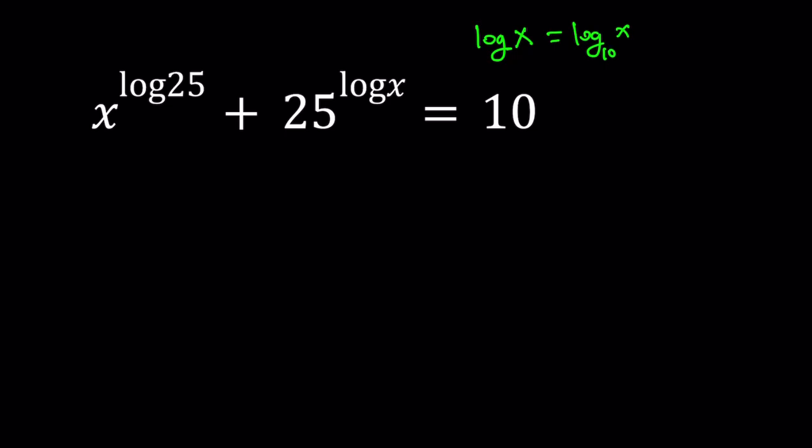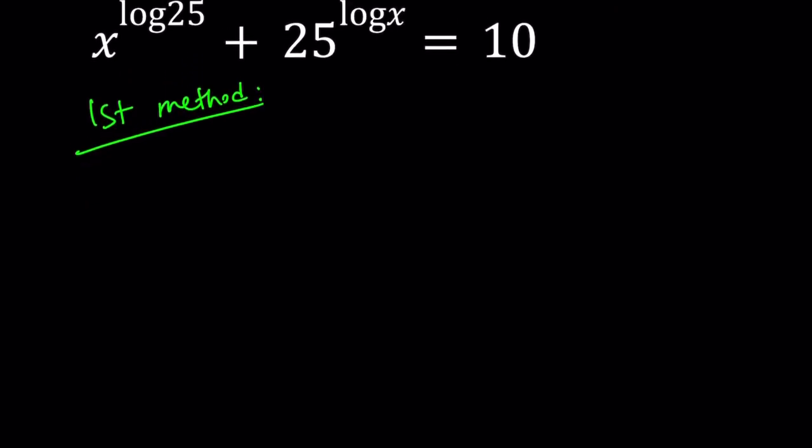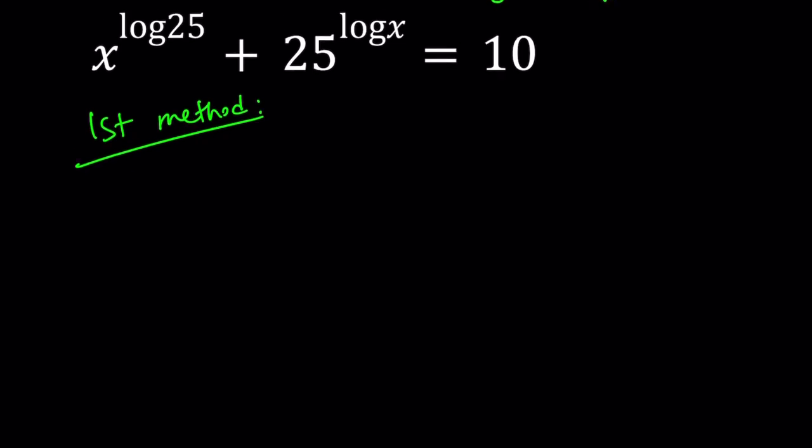So I'll be presenting two methods and let's start with the first one. Some people think that first method is called first method because you use it first, but that's not always true. I'm going to be using substitution for my first method. I'm going to call log x equal y. This makes sense because I want to get rid of the log at least for now, and I want to turn this into an exponential equation if possible. I know it's not going to be possible, but it'll be possible partially.